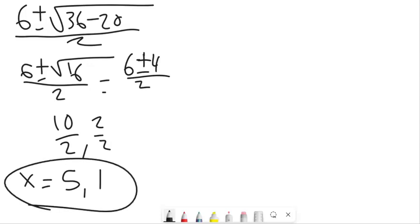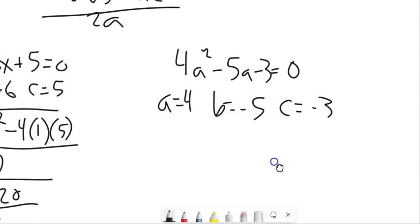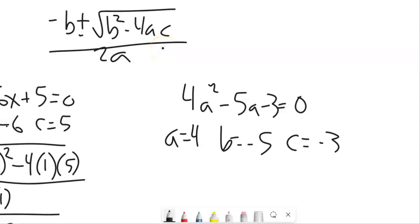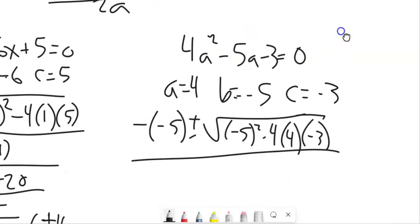And you can plug them back into the original equation. Make sure that they work. Check this one out. A is 4, B is negative 5, C is negative 3. Plug them in.